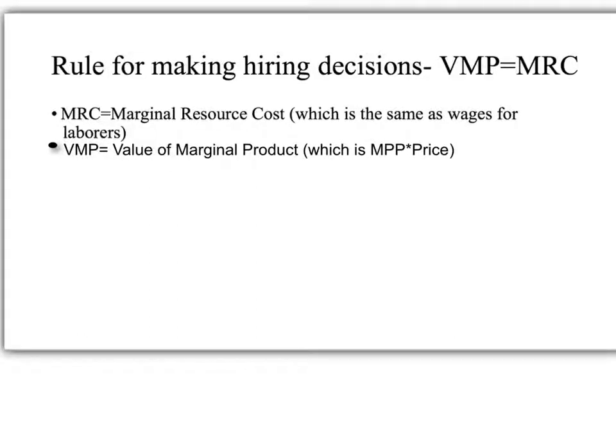Looking at rules for making hiring decisions, just like in Unit 3 the theory of the firm — where we dealt with marginal cost equals marginal revenue to maximize profits — it's very similar in the factor market, except we use the terms VMP equals MRC.